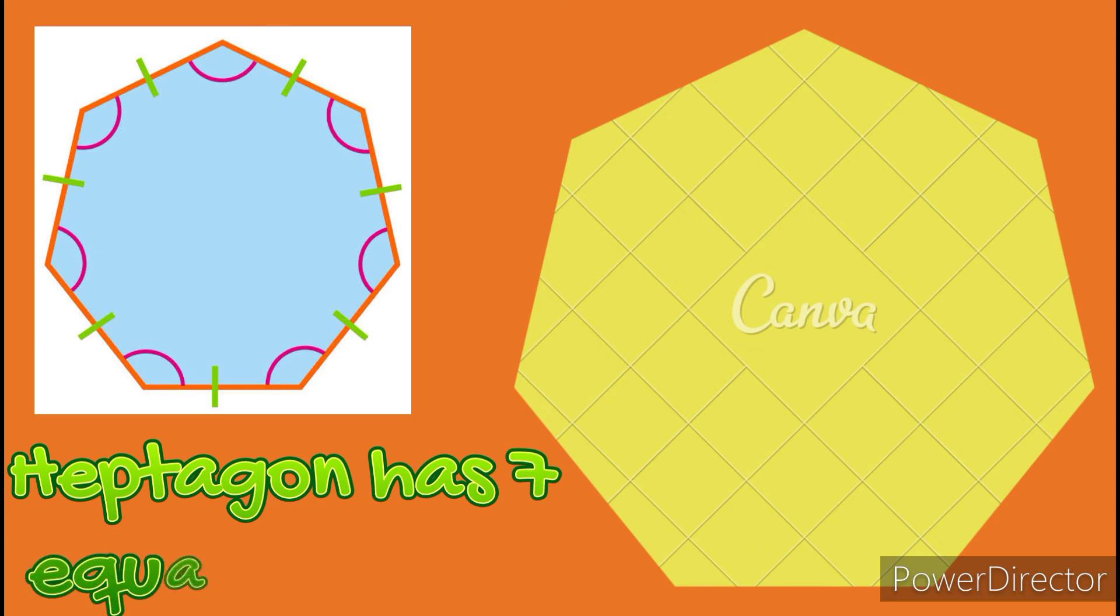Heptagon. Hepta means seven. Heptagon has seven equal sides: one, two, three, four, five, six, and seven.